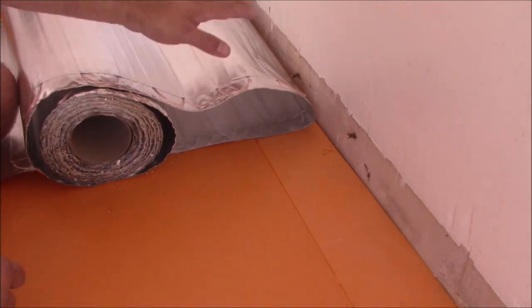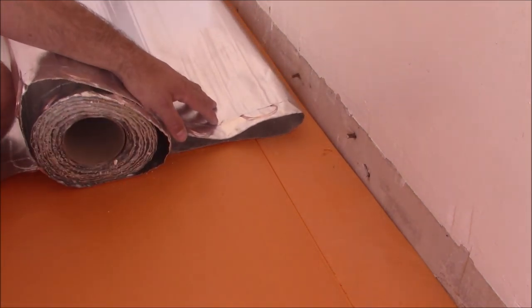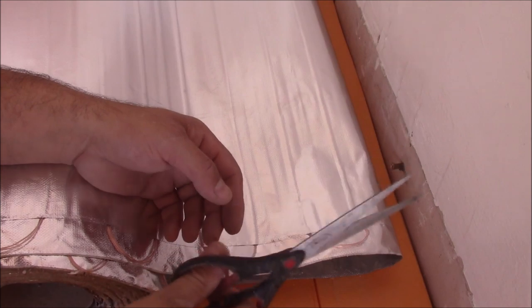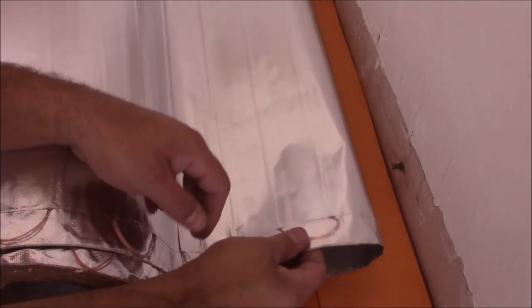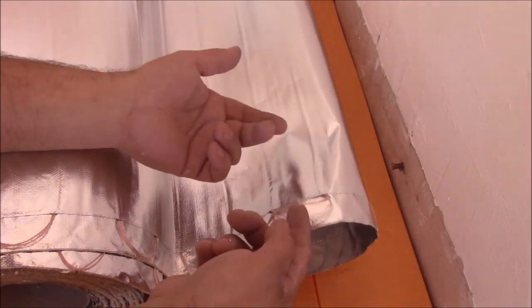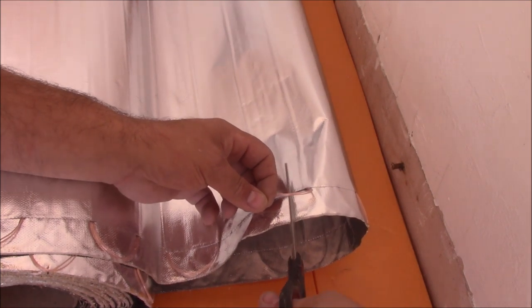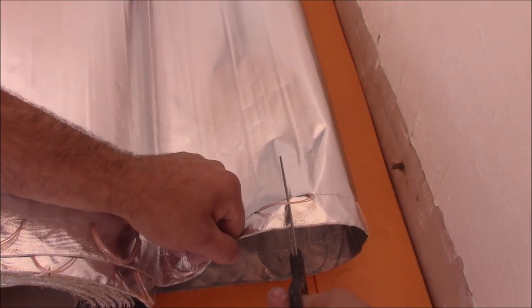So now when you come to the end of the wall, obviously you need to cut this mat. You need to use scissors to do it. You can cut the foil, but don't cut these wires. When you cut the wires, the mat is damaged and it's not going to heat. So basically what you do, you just cut under the wires.